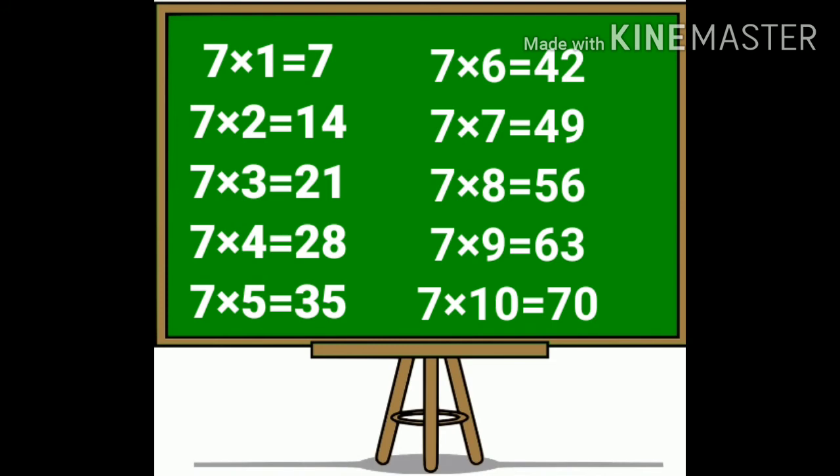7 7's are 49. 7 8's are 56. 7 9's are 63. 7 10's are 70.